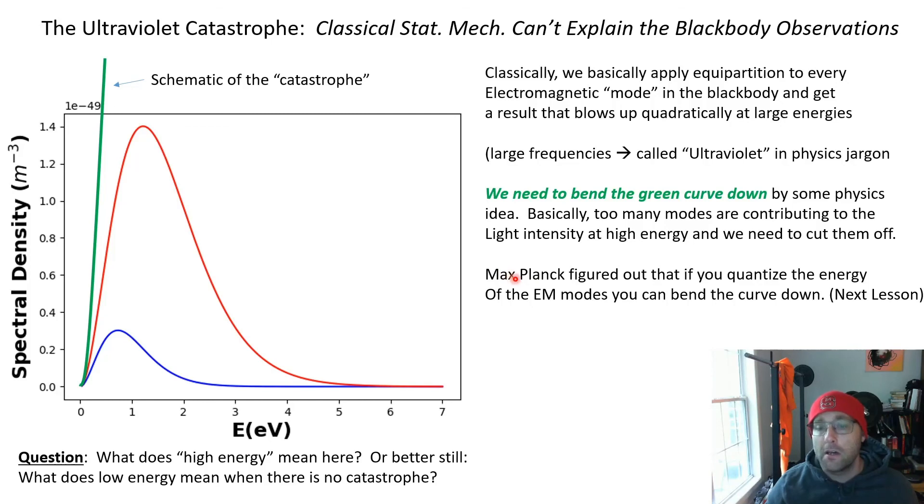And so it was really an interesting analysis in that there was this discrepancy between experiment, these peaked curves, and theory, the green curves. And Planck sort of just went in and played with it and was like okay, what do I have to do to turn this green curve into say this red curve? And that's where he got the idea for quantization of photon energy.